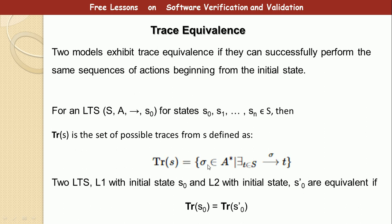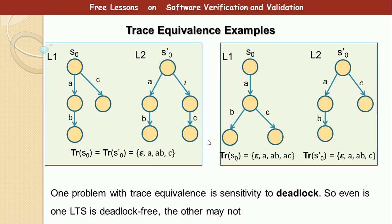The trace for s is defined as the set of sequences that are members of A* such that t is a member of the set of states S and t can be reached through those sequences. Don't worry too much about the formula — maybe pause the video and get used to it if you want. For trace equivalence examples, take your time to look at the two boxes shown: L1 is equivalent to L2 in the first box because we define all paths starting from the initial state — if all paths are the same, they are equivalent.